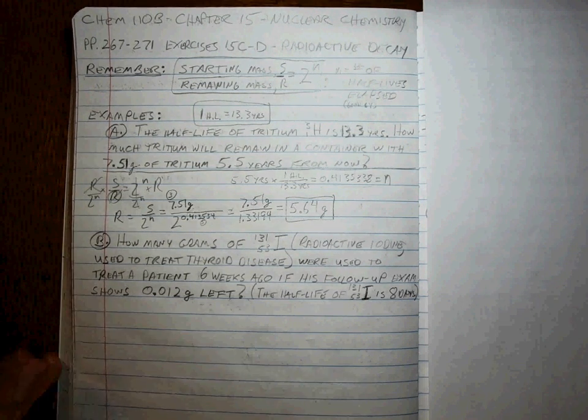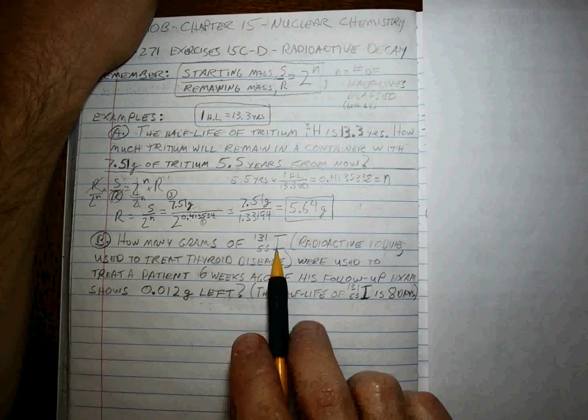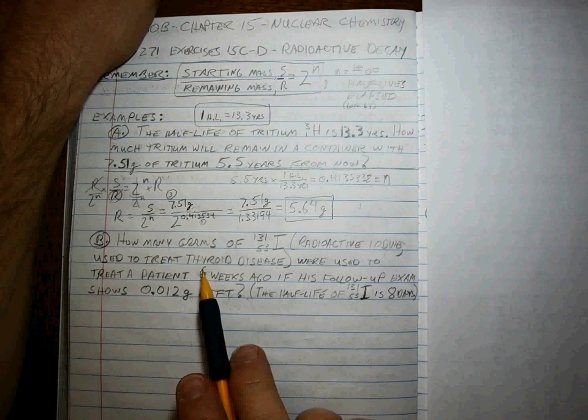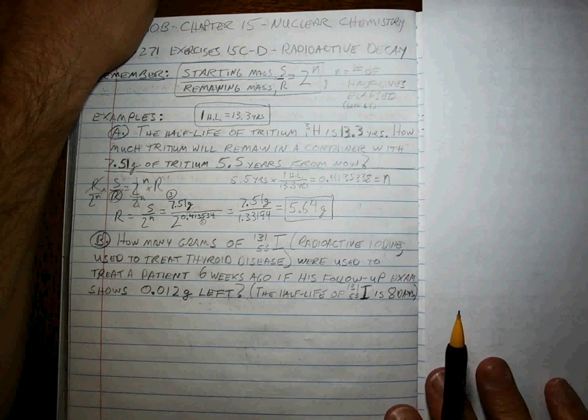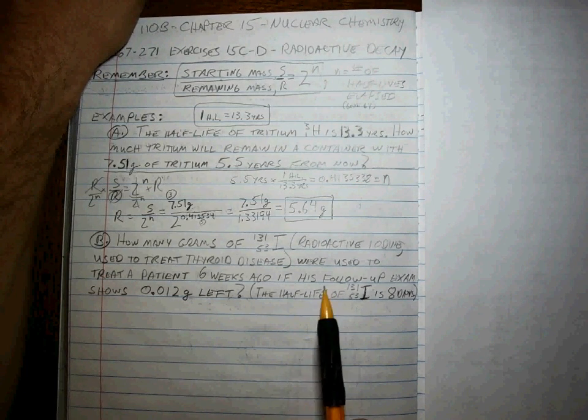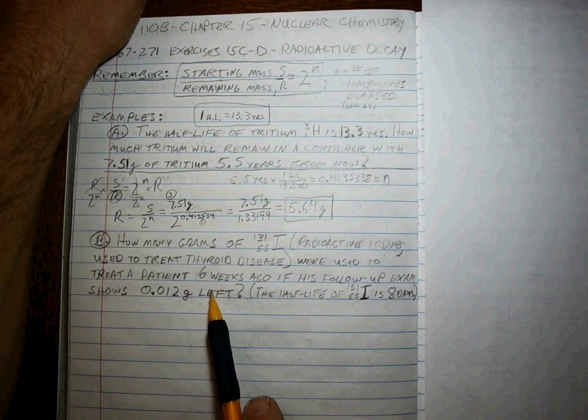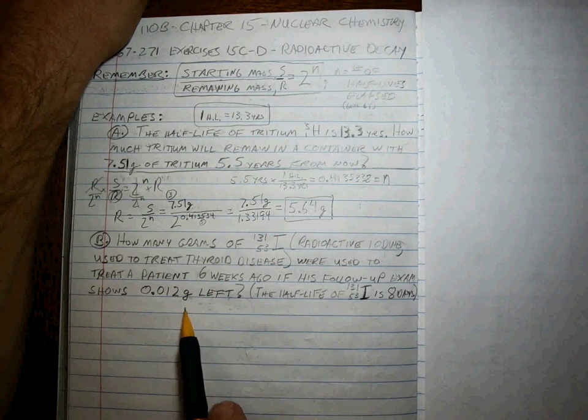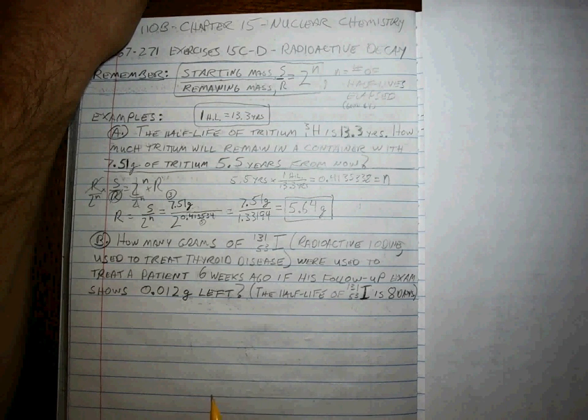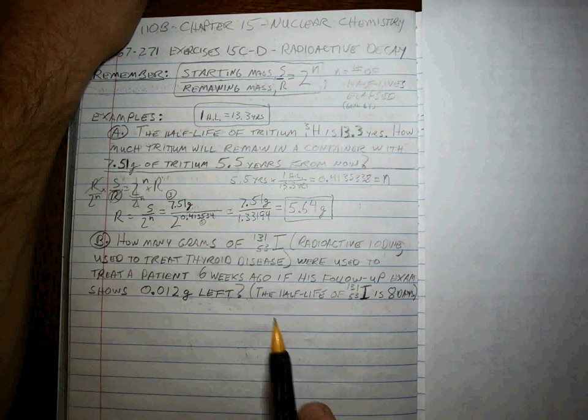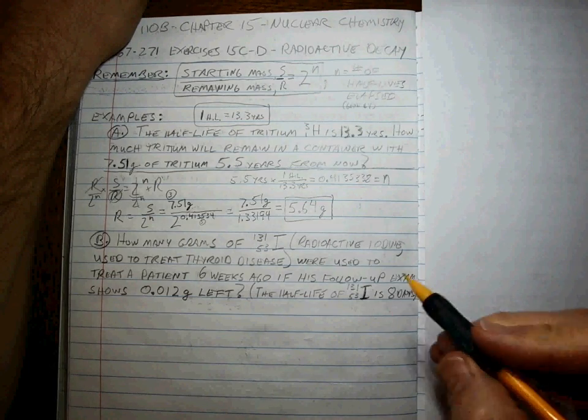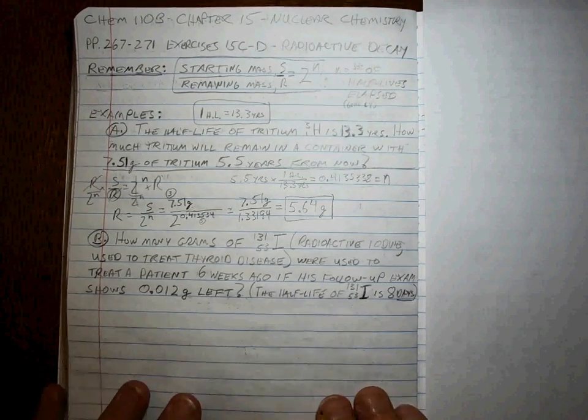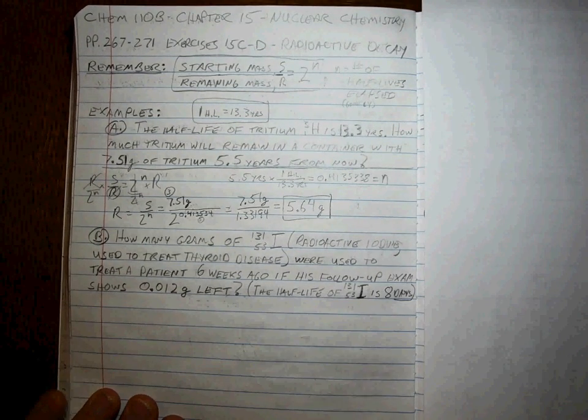All right, let's look at the second problem. How many grams of radioactive iodine used to treat goiter or other kinds of overactive thyroid conditions were used to treat a patient six weeks ago. If his follow-up exam shows 0.012 grams that are left in his system of the iodine, the half-life of this stuff is 8 days. Got to make sure your units work.